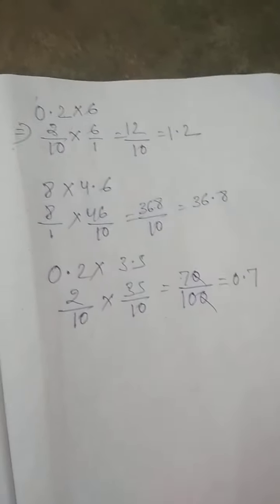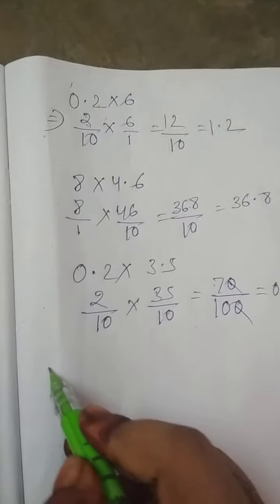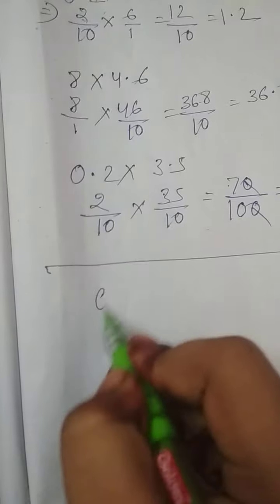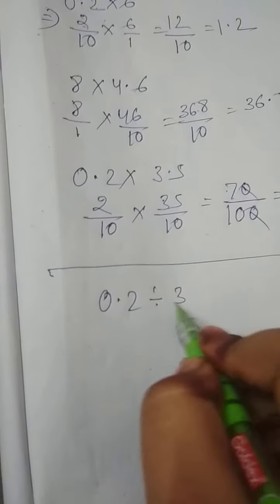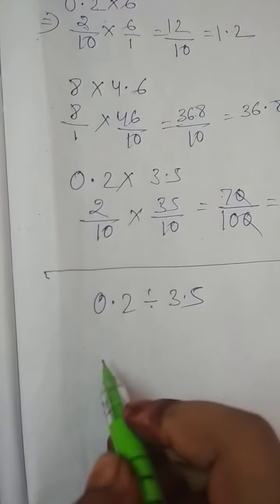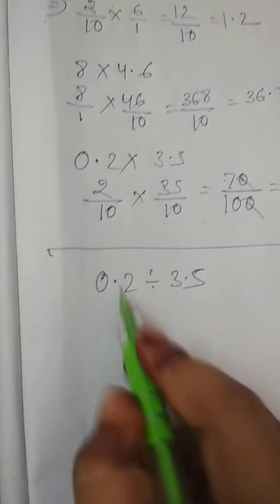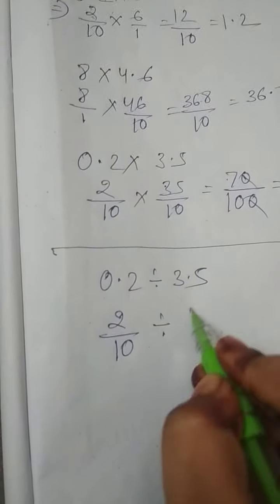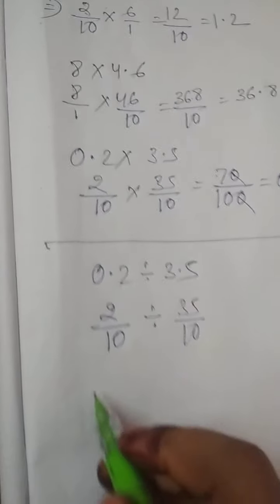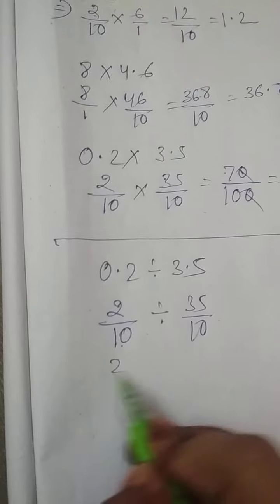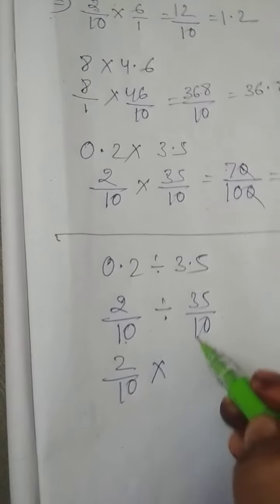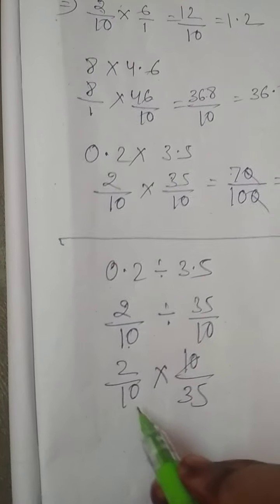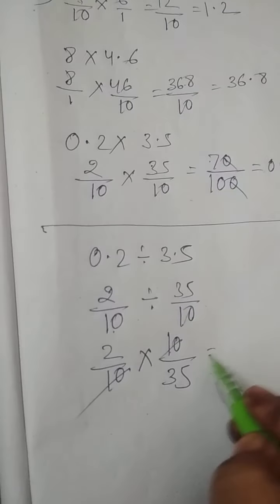Got it, students? Same in the division process — look at here. 0.2 divided by 3.5 is given. First convert into fractions. The first one will remain the same, multiply, the second one will be reciprocal. 10 times cancel, and the answer is 2 by 35.